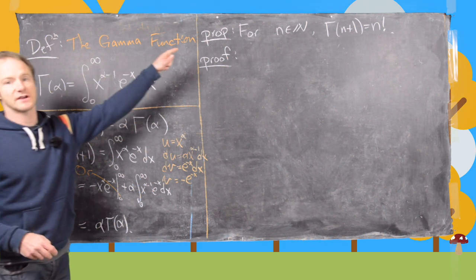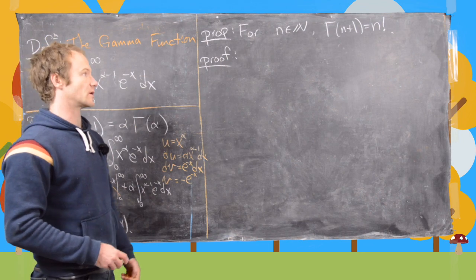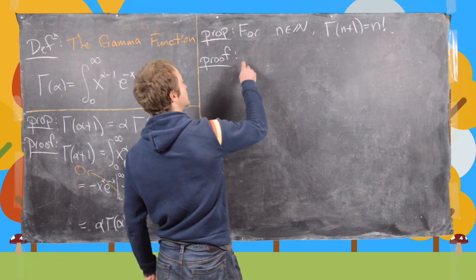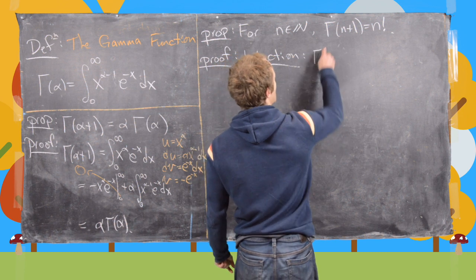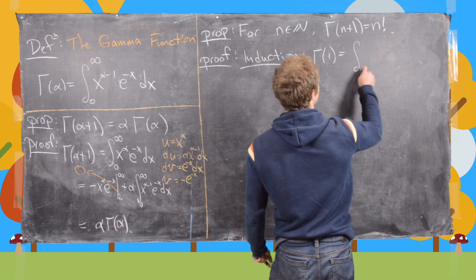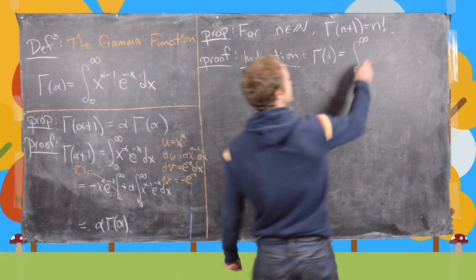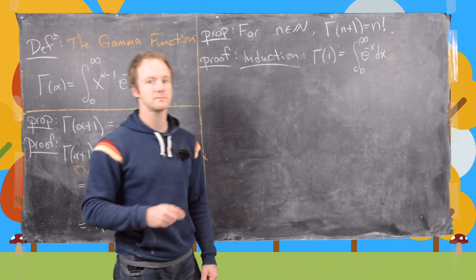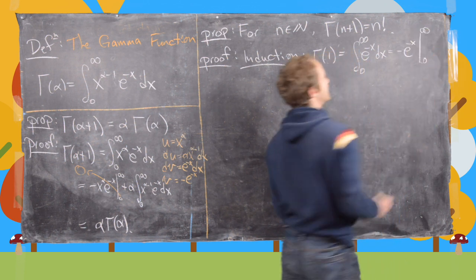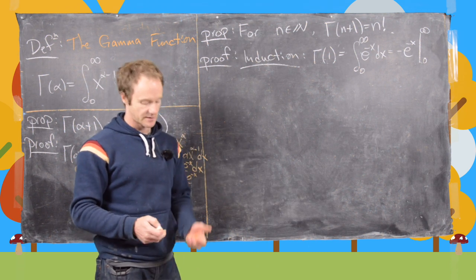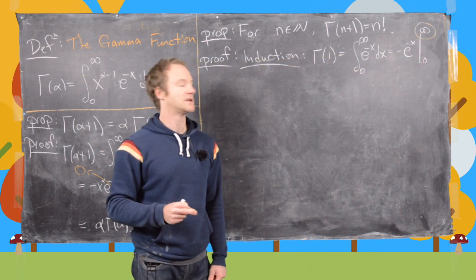We've established this rule, and something that follows quickly from it is: gamma of n plus 1 equals n factorial. We prove this by induction. First, gamma of 1 equals the integral from 0 to infinity of x to the 0 times e to the minus x dx, which equals negative e to the minus x evaluated from 0 to infinity.